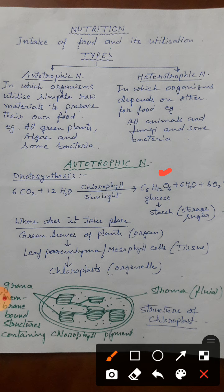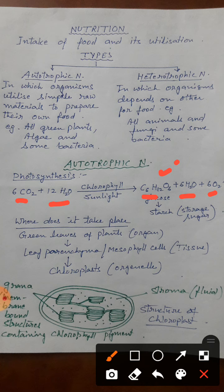To photosynthesis ka ye reaction aapko learn karna hai. Ek single molecule of glucose C6H12O6 banane ke liye six carbon dioxide molecules ki zaroorat padti hai, twelve water molecules ki zaroorat padti hai. So this is the balanced equation: six carbon dioxide when reacts with twelve water, it produces one glucose, six water and six molecules of oxygen. Ye hai overall reaction of photosynthesis.